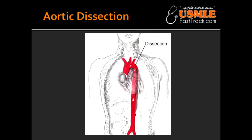Aortic dissection. What is aortic dissection? Aortic dissection is a longitudinal intraluminal tear forming a false lumen.